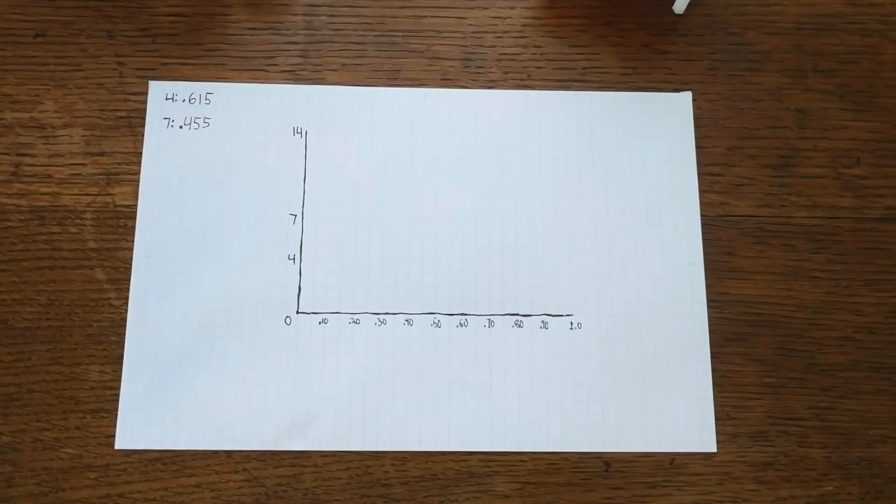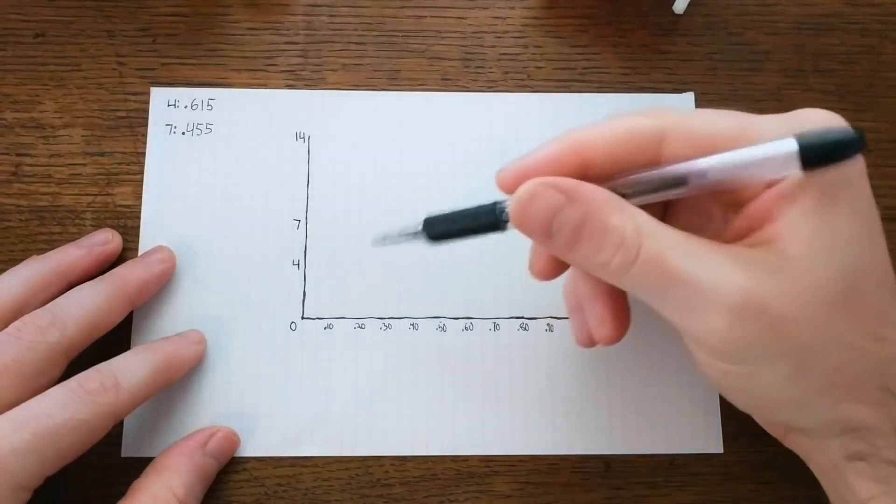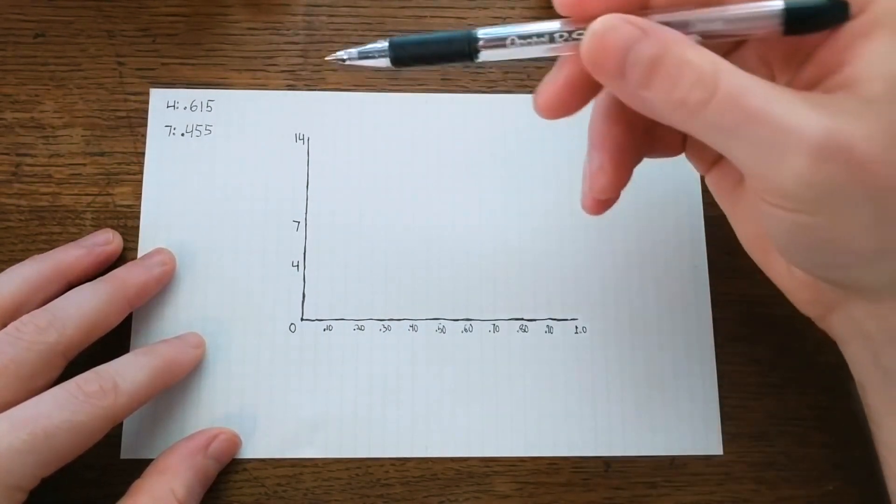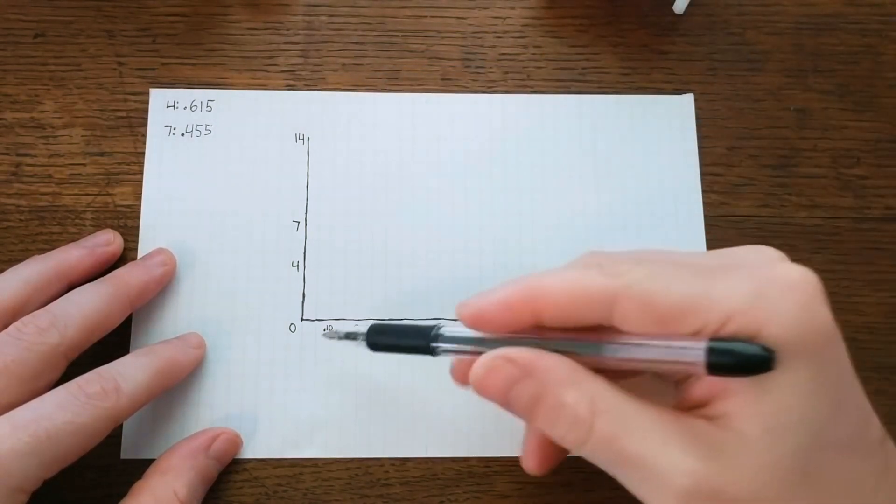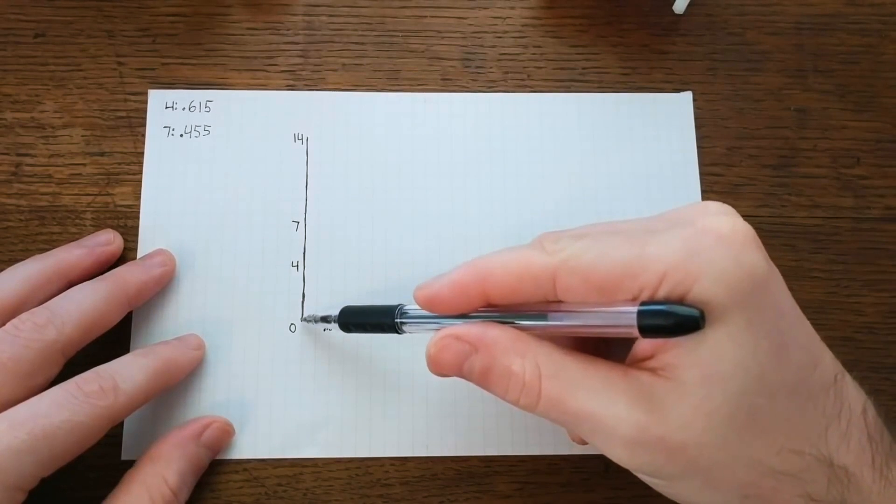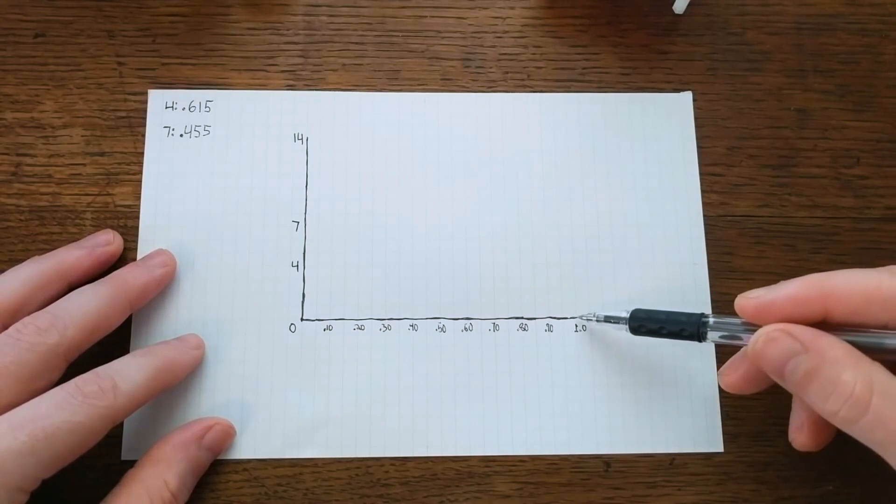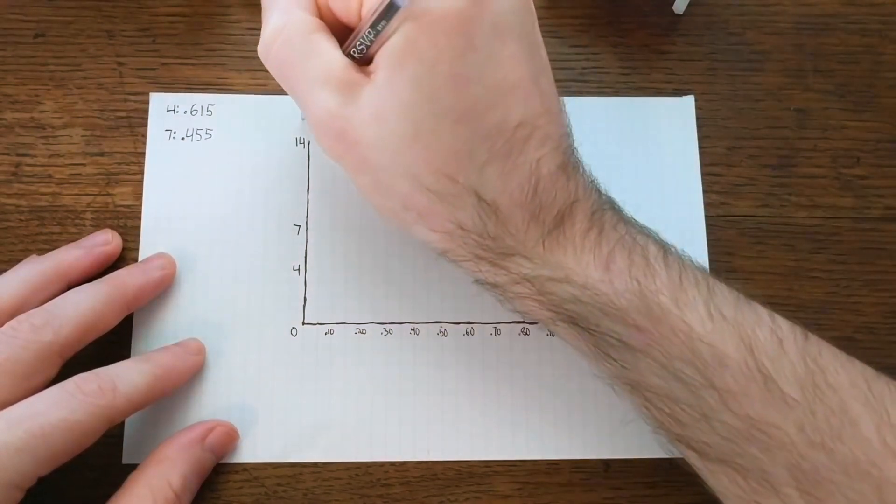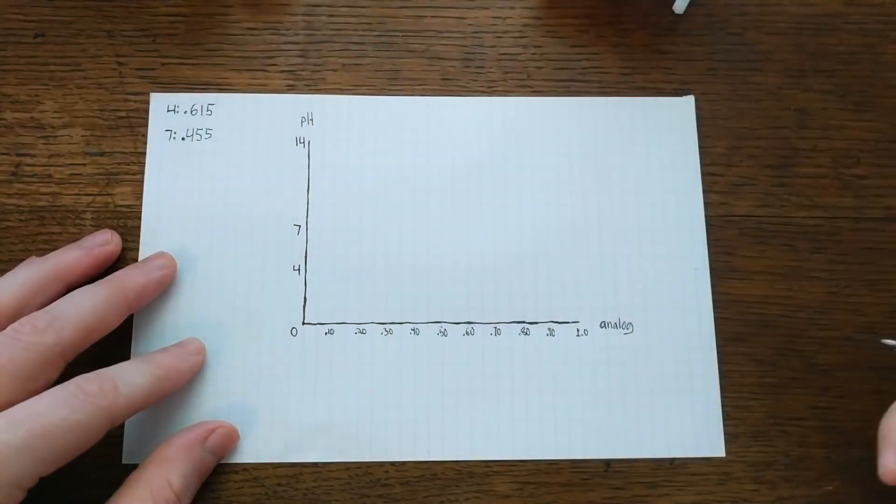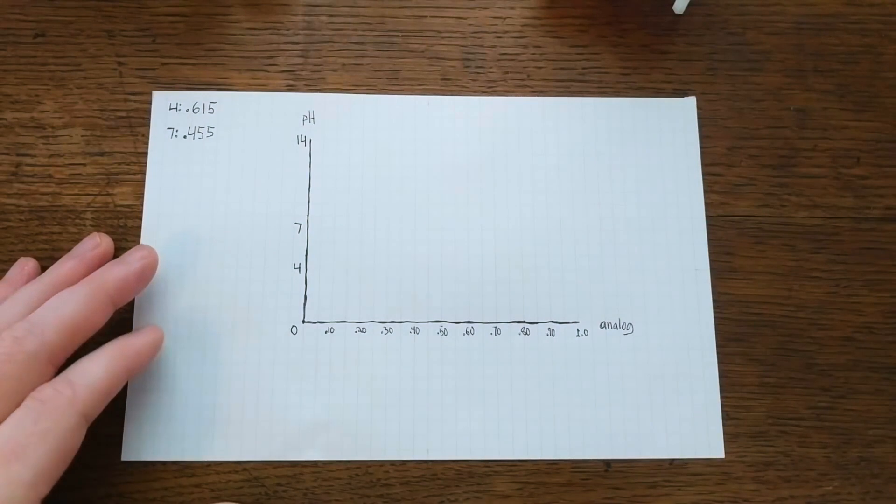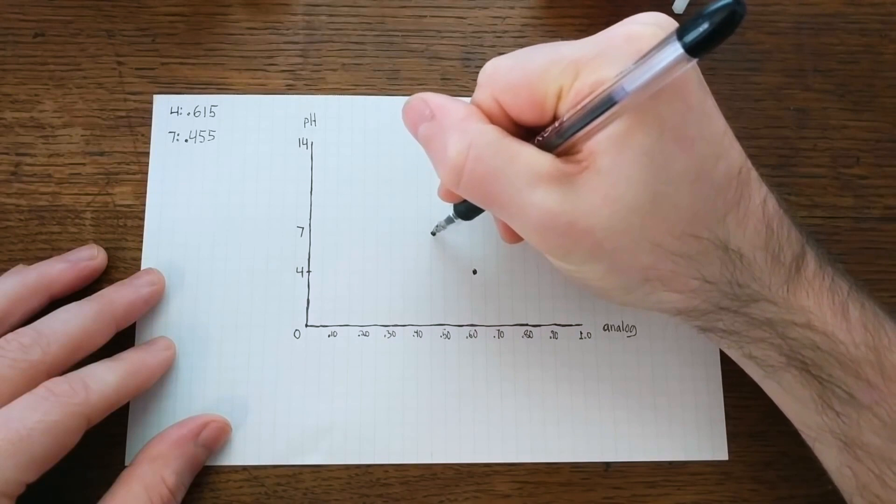Now it's time for a bit of math. But don't worry, it's pretty easy math that most of you will remember from algebra. Or if you're just getting into algebra, hopefully this will be familiar to you. Since we're trying to calculate pH based on our analog readings, we're basically deriving a function where our analog readings are the x input for our function, and that'll be the x-axis here. And the pH values are the y output of our function, so that'll be the y-axis. Now I can plot those two measurements I just took onto the graph by locating their approximate analog value for x and pH value for y.